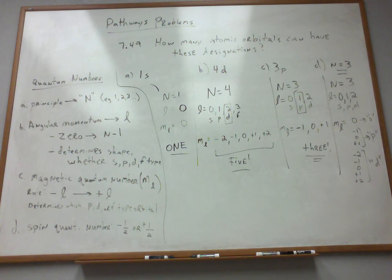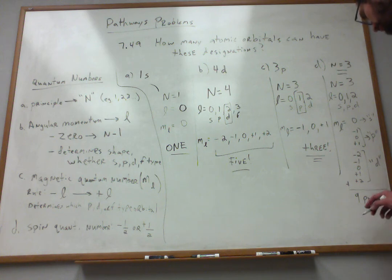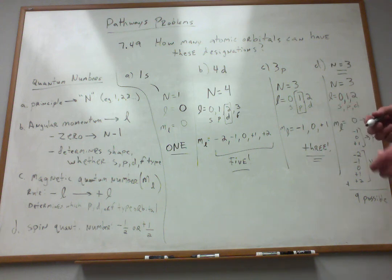So what I need to do is add up all of these. There's 1s, 3 of these, that makes 4, and then 5 more. So if I sum them all up, it looks like there's 9 possible orbitals for when the primary quantum number is 3, or n equals 3.